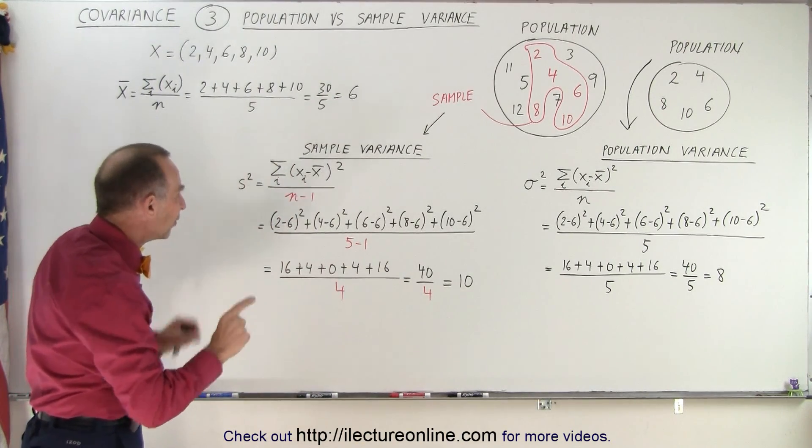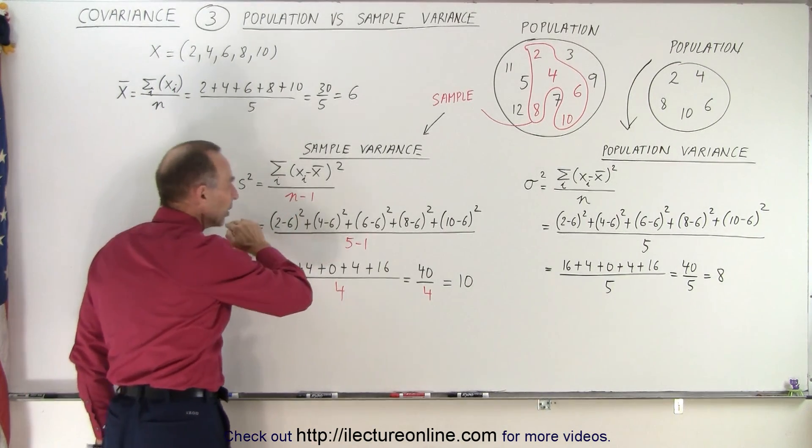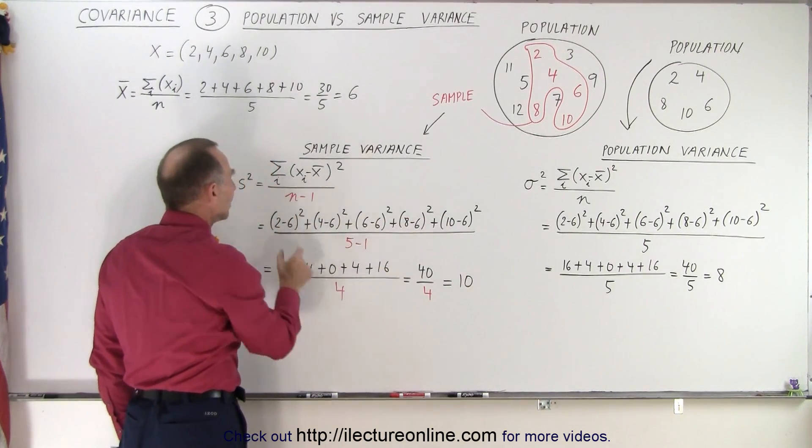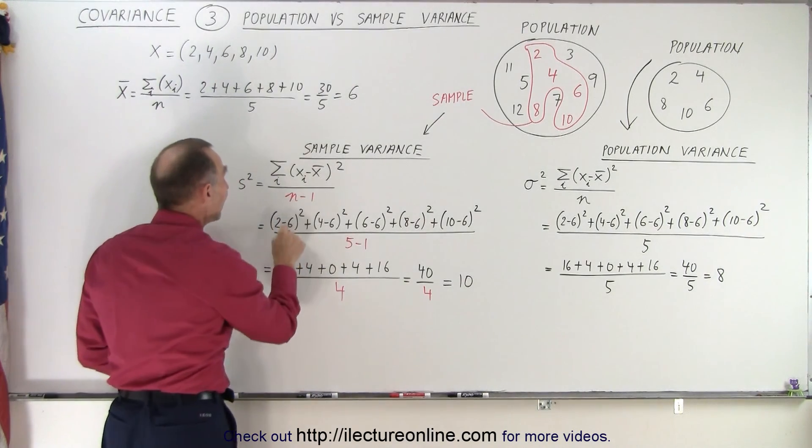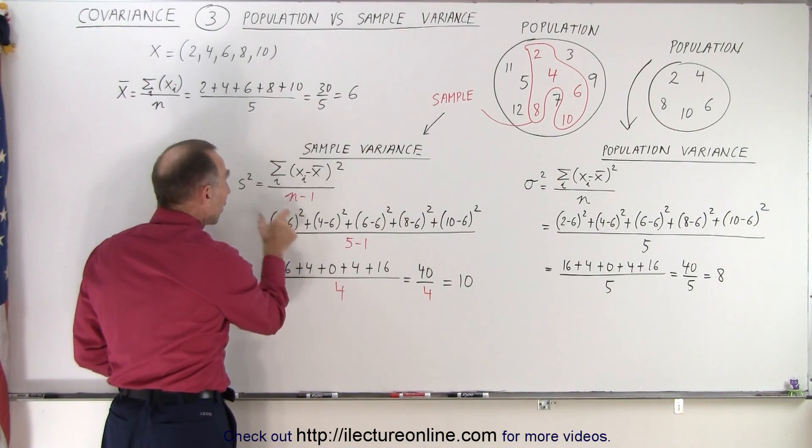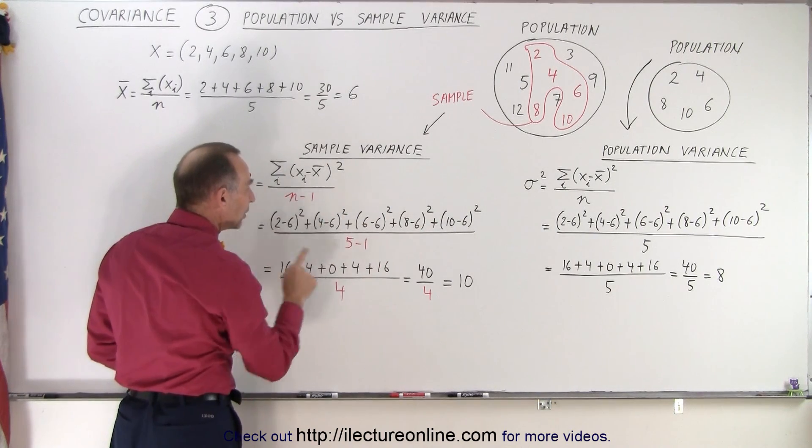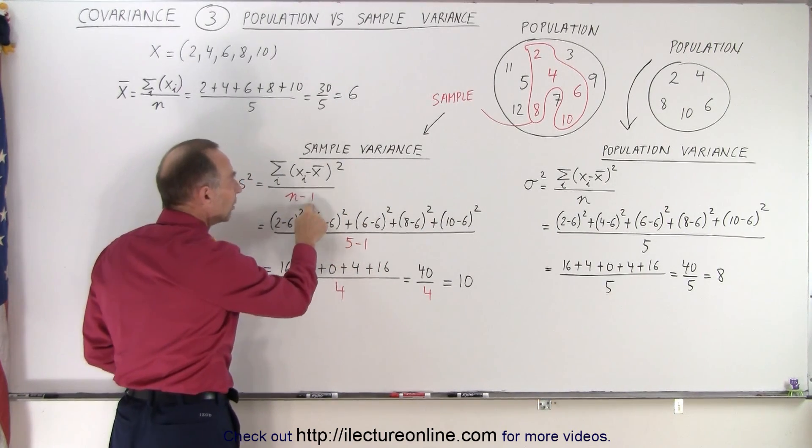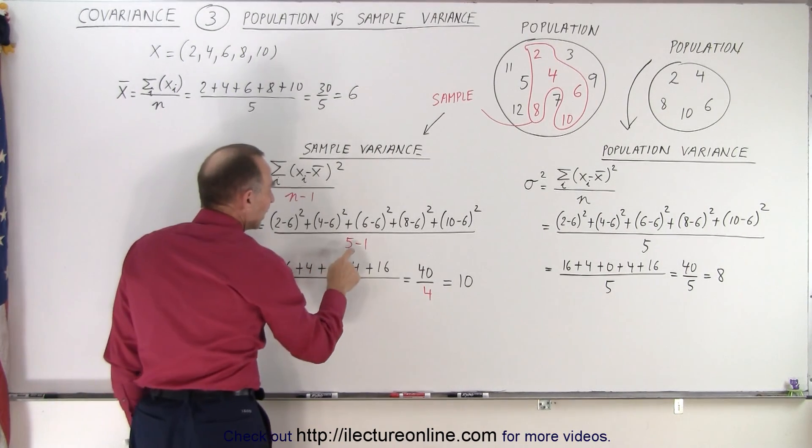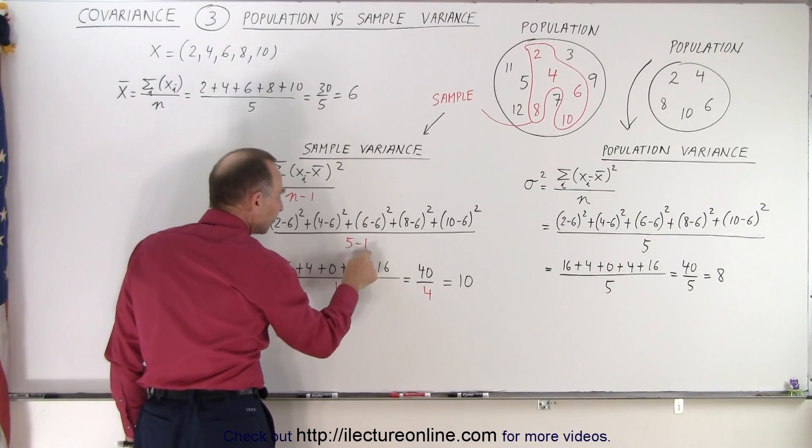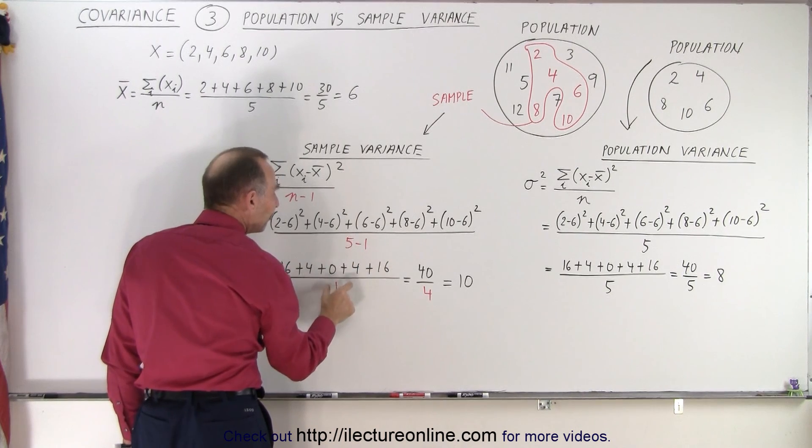Notice the only difference is in the denominator. The numerator looks exactly the same. We take the difference between each of the numbers in the sample and the average number. We square that difference, and we add them all up. But now we divide by n minus 1. There's five numbers in our sample, but the denominator... We subtract 1 from the denominator and turn it into a 4.